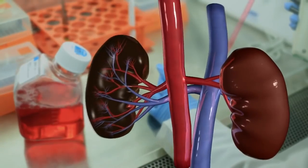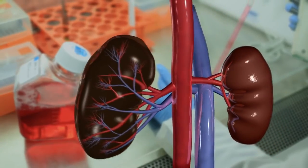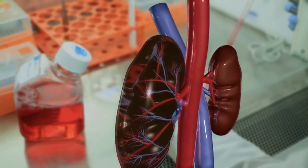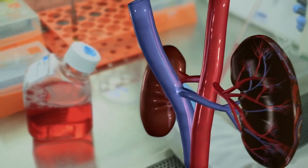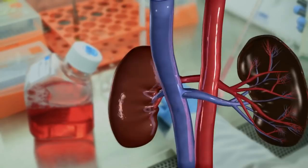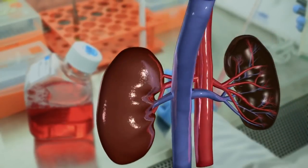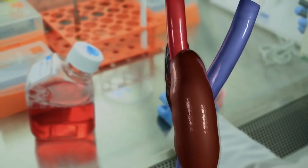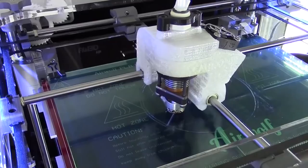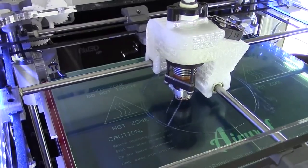In 2002, a working miniature 3D kidney was engineered that could filter blood and produce diluted urine. This event sparked widespread interest in using the technology to print organs.